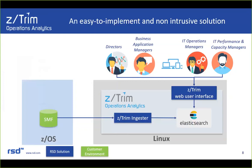Now let's take a look at the architecture for Z-TRIM. We're gathering SMF records and targeting specifically records 30, 70, 72, and 89. We're pulling the SMF records and processing them off-platform — we're not contributing to CPU consumption in any way. We're just taking the SMF records off-platform and ingesting them. You can use this in a Linux environment — a Linux VM or a standard Linux server. We also offer Z-TRIM as Software as a Service.